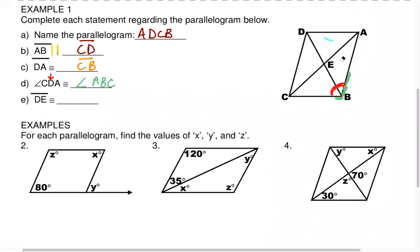Lastly, part E: DE — going through the shape, that is part of the diagonal. DE is congruent to what? We learned that the diagonals bisect each other, so D to E is the same length as E to B. Because E is like a midpoint of that diagonal, DE is congruent to BE.